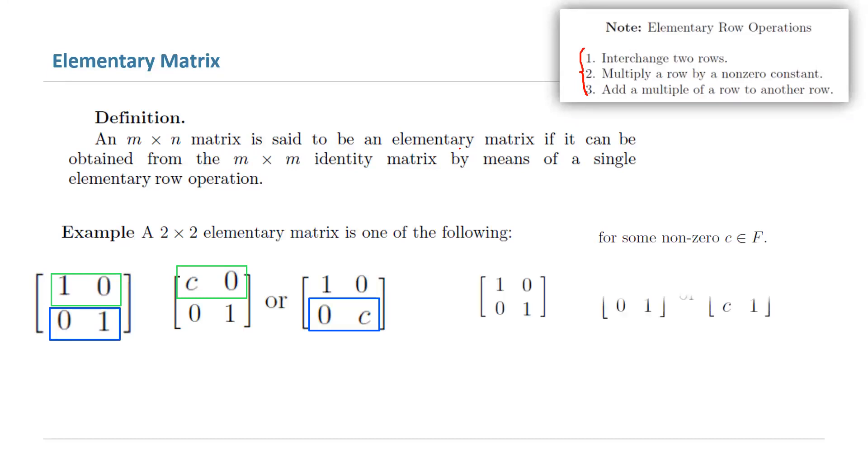You can take the second row and multiply by C and add it to the first row, or multiply the first row by C and add it to the second row.